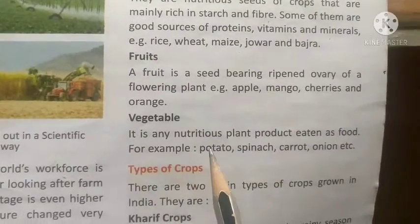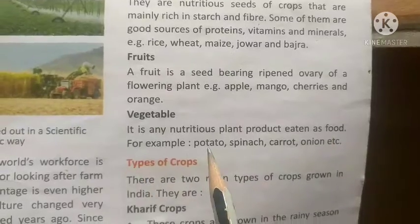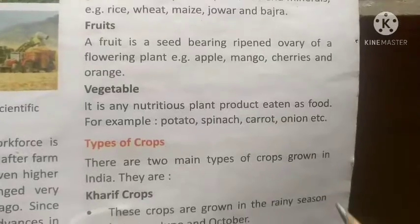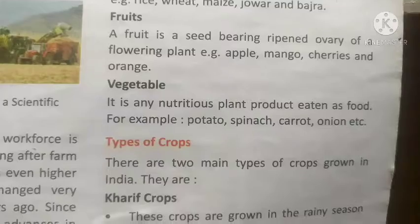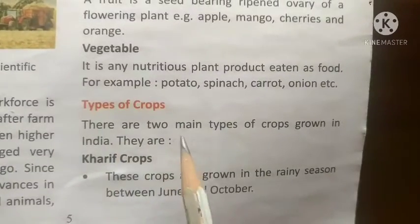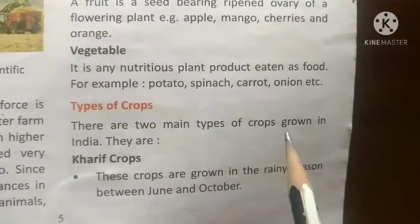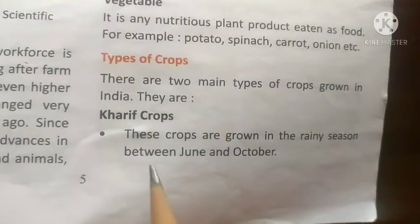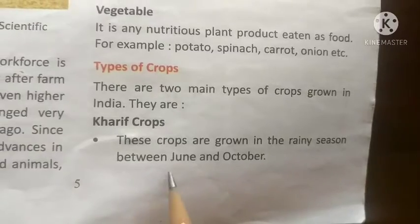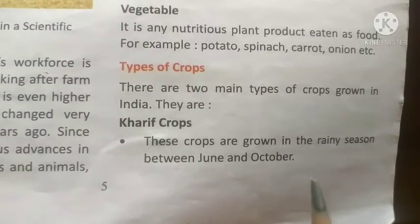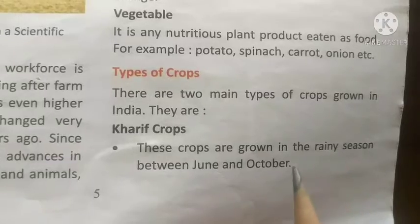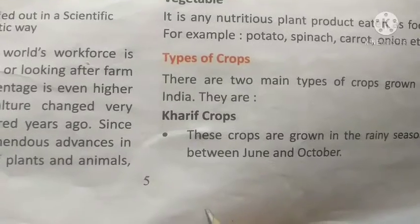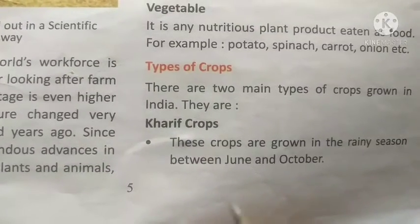Vegetables are plant products eaten as food — for example, potatoes, spinach, carrots, and onions. The types of crops grown in the rainy season are grown between June and October.